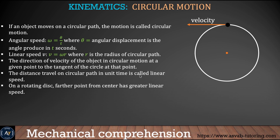The next thing we learn is circular motion. If an object moves on a circular path, the motion is called circular motion. Say you are spinning a rock around your head with a rope and you suddenly snap the line. The object will go in the direction perpendicular to the rope — that is the tangent. There is a relationship between angular velocity and linear velocity called V equals omega r, where r is the radius and omega is the angular velocity.